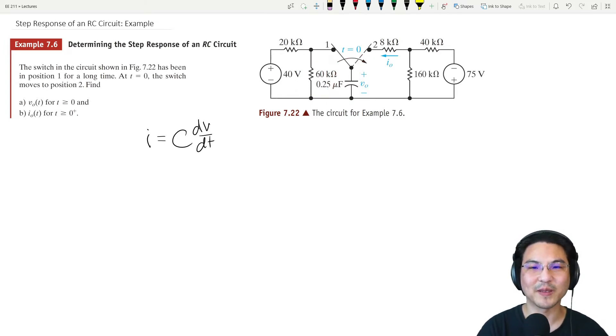These are in parallel, so the voltage for the capacitor is the same as the voltage across the 60k resistor. If you look at this, it is a voltage divider.